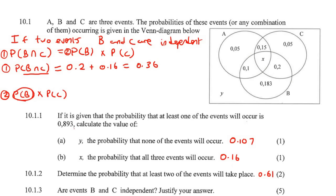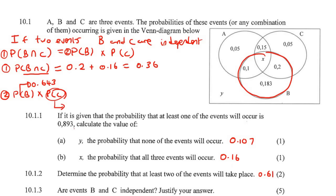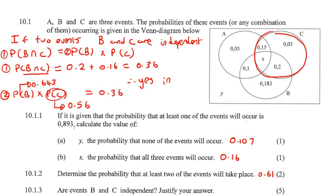Now for part two: P(B) means the whole of B. So P(B) = 0.16 plus 0.1 plus 0.183 plus 0.2, which gives us 0.643. Then P(C), the whole of C, is 0.16 plus 0.2 plus 0.05 plus 0.15, giving us 0.56. Multiplying those two together gives us 0.36. These two values are equal, therefore yes, B and C are independent. I've hardly ever seen a question where they actually end up being independent.